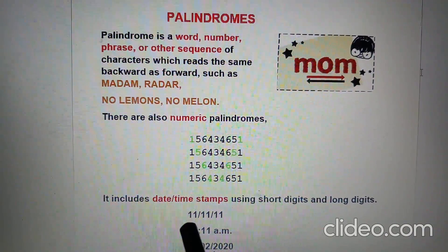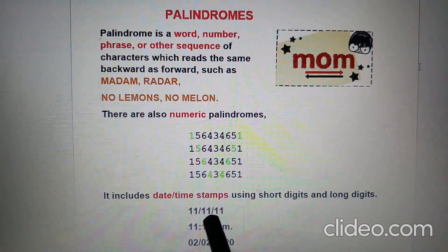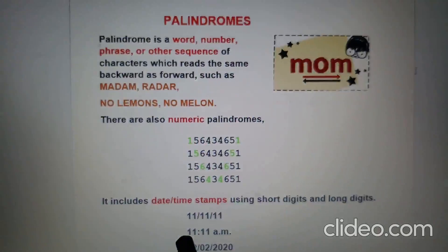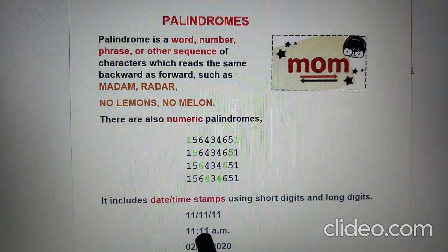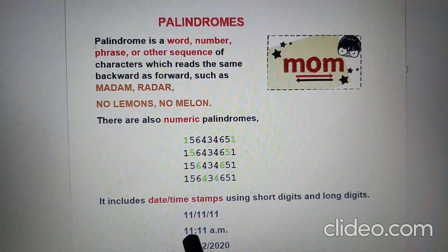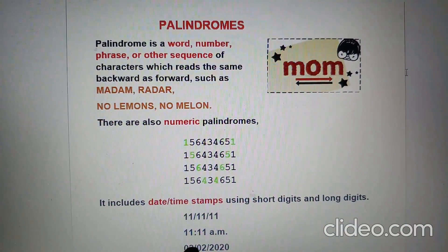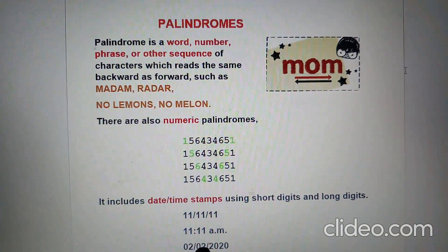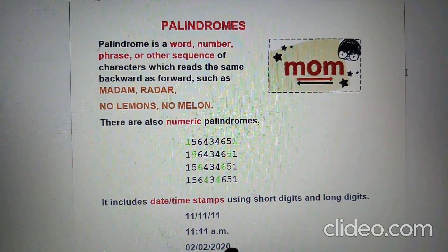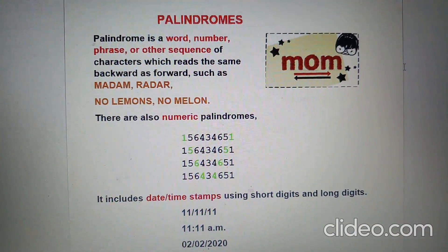It can also be a date or time. Date, month, year. For example, 11:11 AM is a time palindrome. And 02-02-2020 is a date palindrome — it reads the same forward and backward.